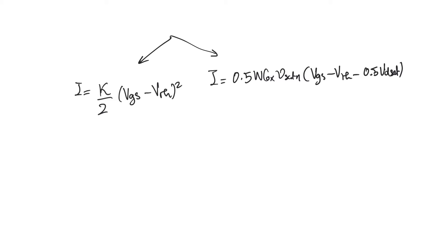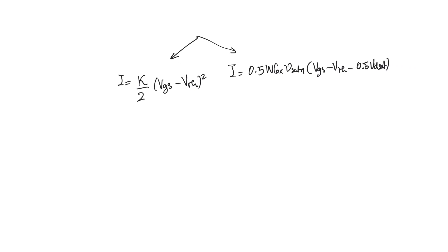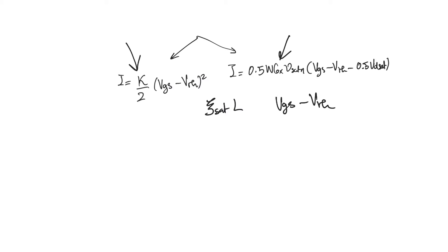It's important to understand how the two are different, when one happens versus the other, and which of them we are happier to see. Basically, the only difference between the two — the thing that causes us to see one and not the other — is how the quantity E_sat_N compares to the quantity VGS minus V_threshold. If E_sat_N is much smaller than VGS minus V_threshold, we are likely to see the first result. If E_sat_N is much larger, we will see the second.